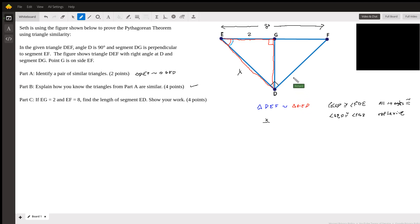And now we're going to look at EF, which is the hypotenuse of the blue triangle, which is 8. And you can see that that corresponds to the hypotenuse of the red triangle, ED, which is X. So we're going to get X squared equals 16.